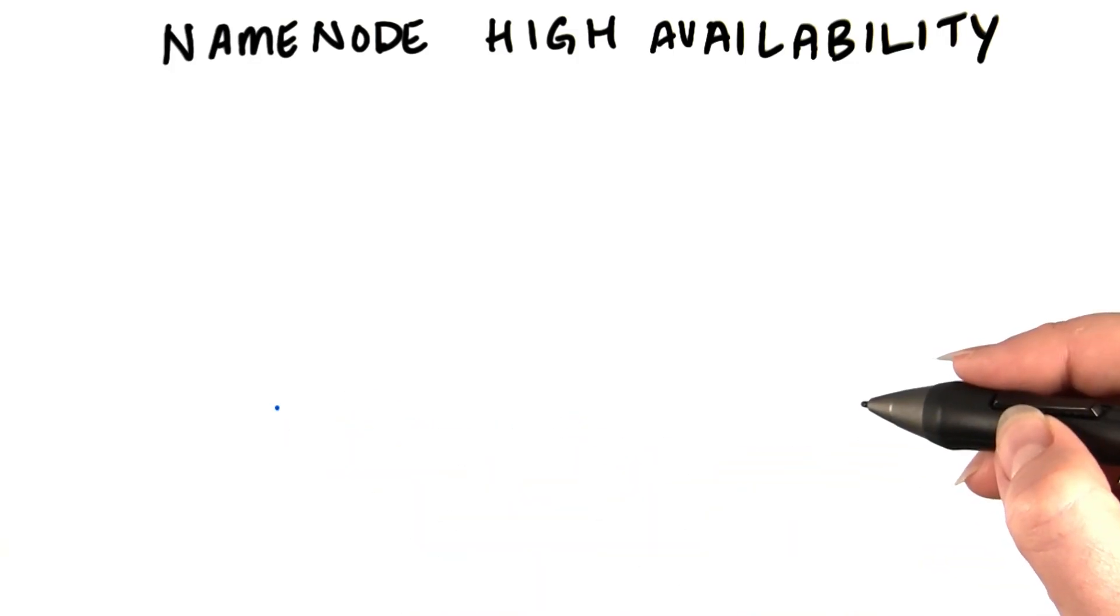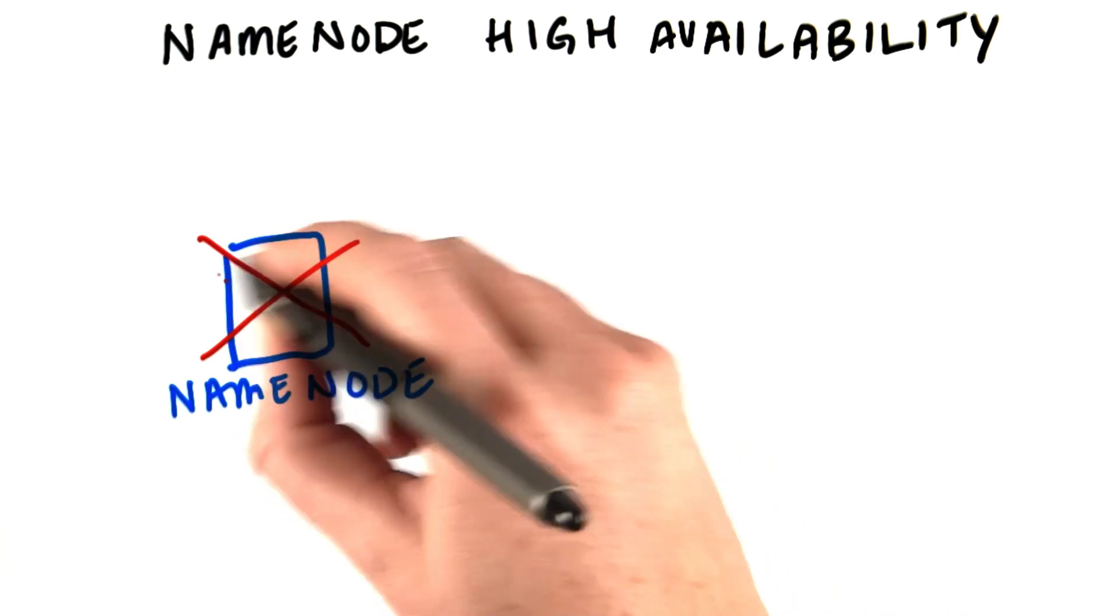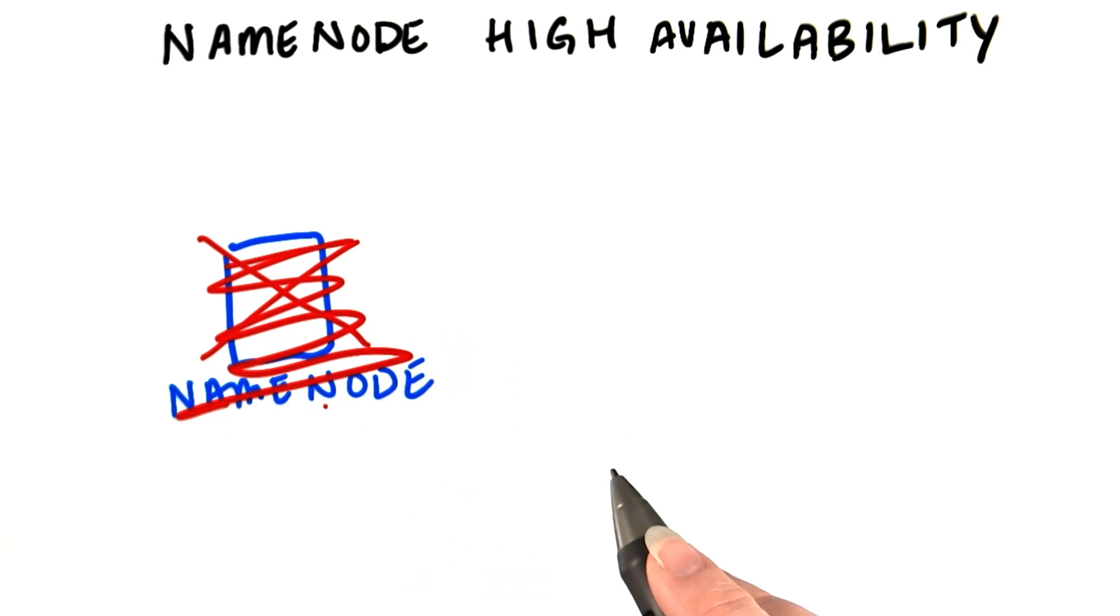For a long time, the name node was a single point of failure in Hadoop. If it died, the entire cluster was inaccessible. If the metadata on the name node was lost completely, the entire cluster's data was lost.